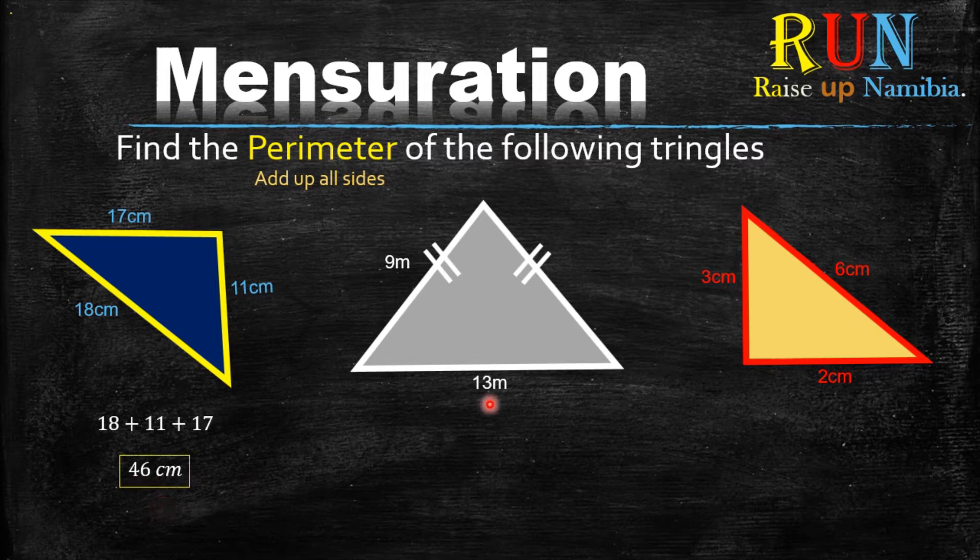How about the second example? Now the second example is a little bit tricky but very easy. Notice that it only has two sides which is the 9 meters and the 13 meters. But notice that there are two lines on this side as well as on this line. Now these two lines means that these sides are actually equal. So meaning this side is also 9 meters.